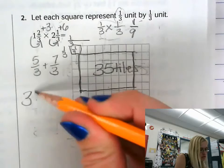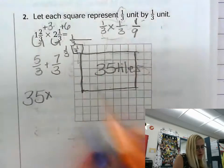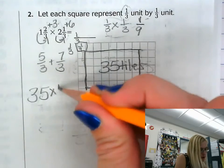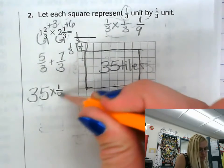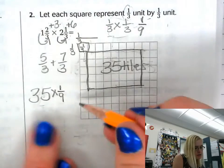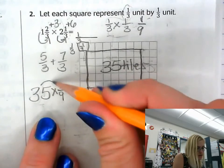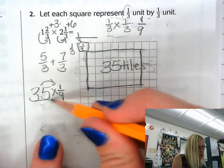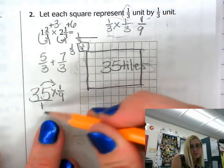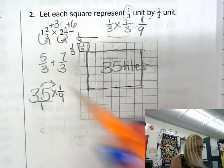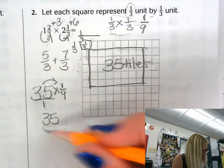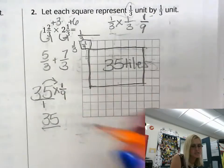So I'm going to take that 35, and I'm going to multiply it by the area of one of my tiles, which we decided was one ninth. So 35 times one ninth is the same thing as saying 35 times one, because I can set my whole number over one. 35 divided by one is still 35. So 35 times one is 35. And my denominator is going to stay the same. One times nine is nine.